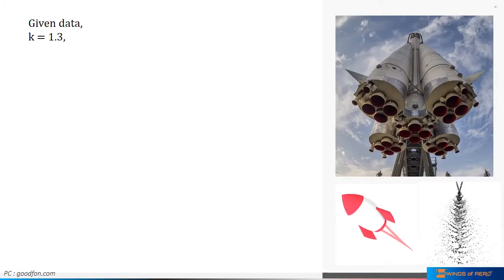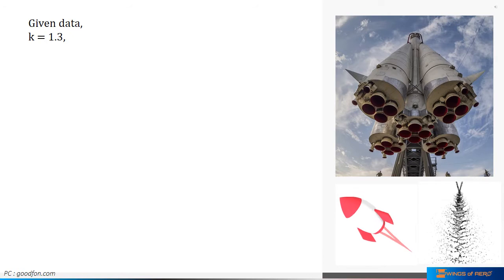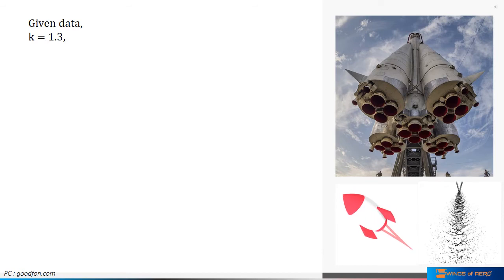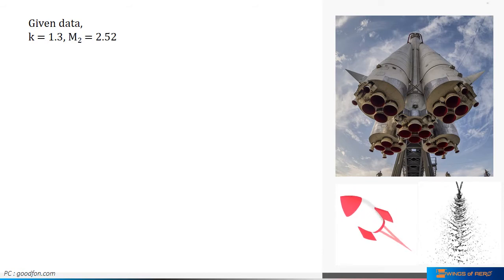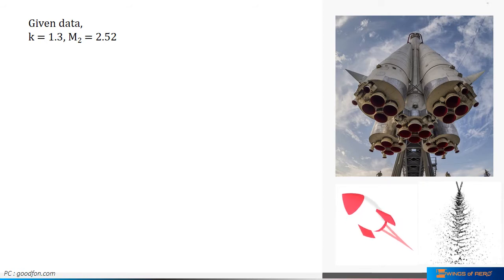Here, we consider a rocket engine. Given data: specific heat ratio of combustion product, k is equal to 1.3. Exit Mach number of rocket engine, M2, is equal to 2.52. Now, we have to find out the chamber pressure and nozzle area ratio between the throat and exit.